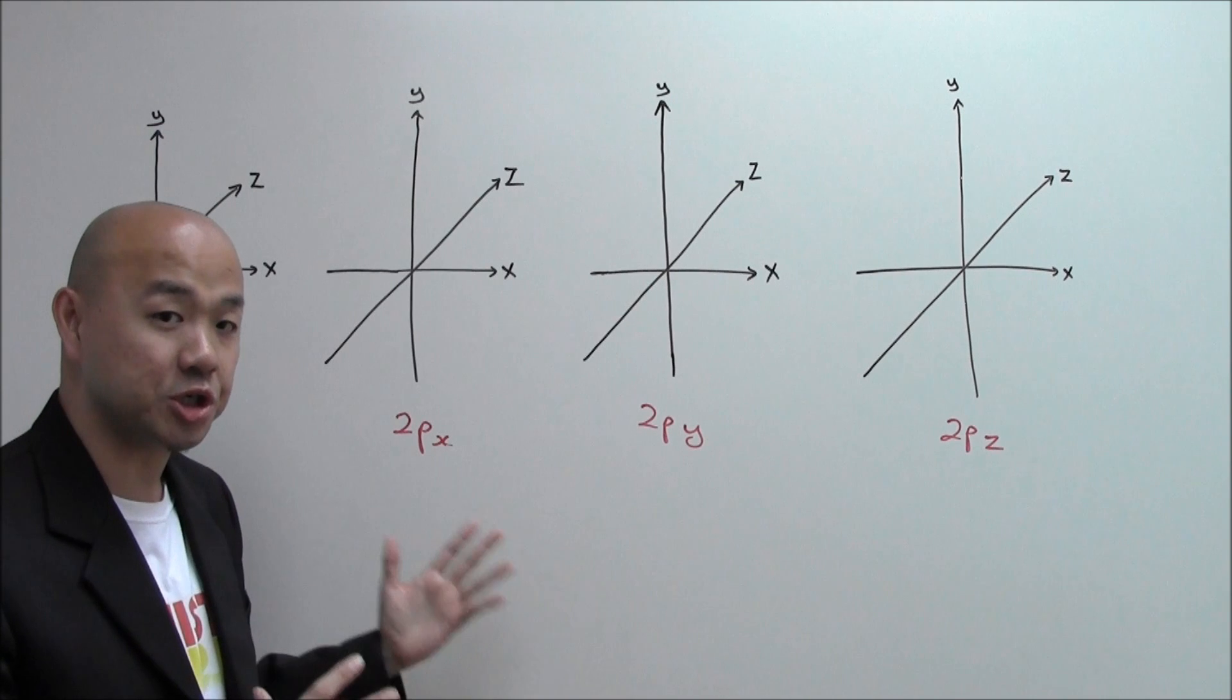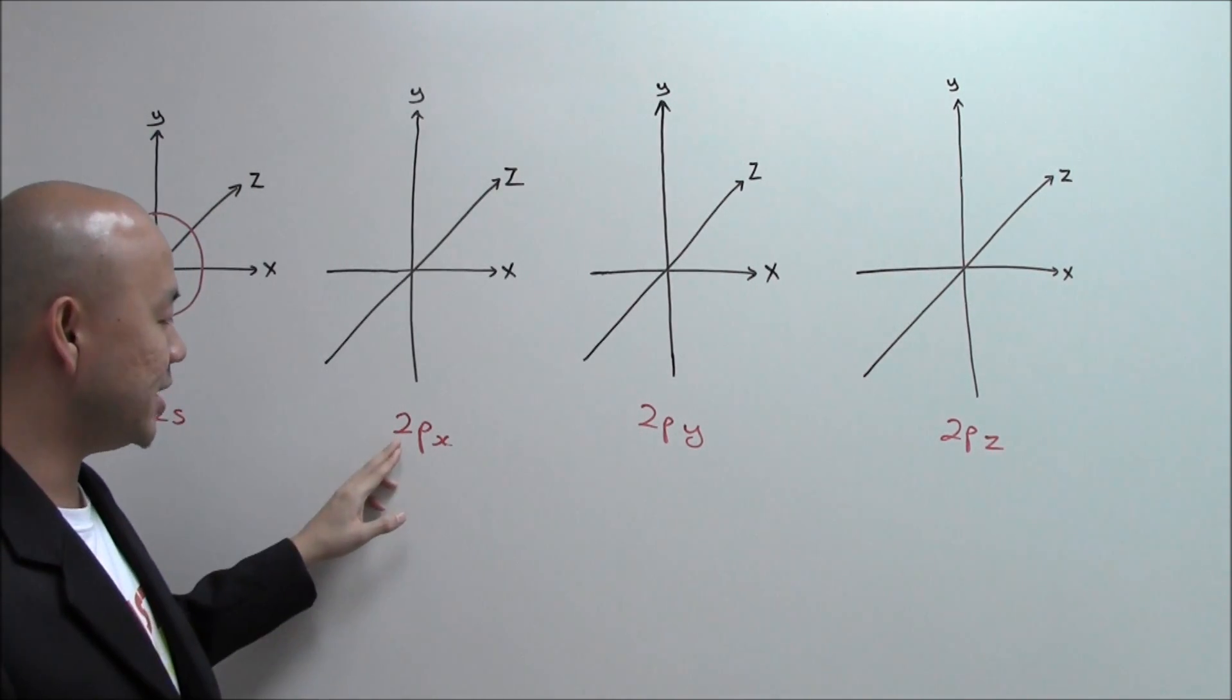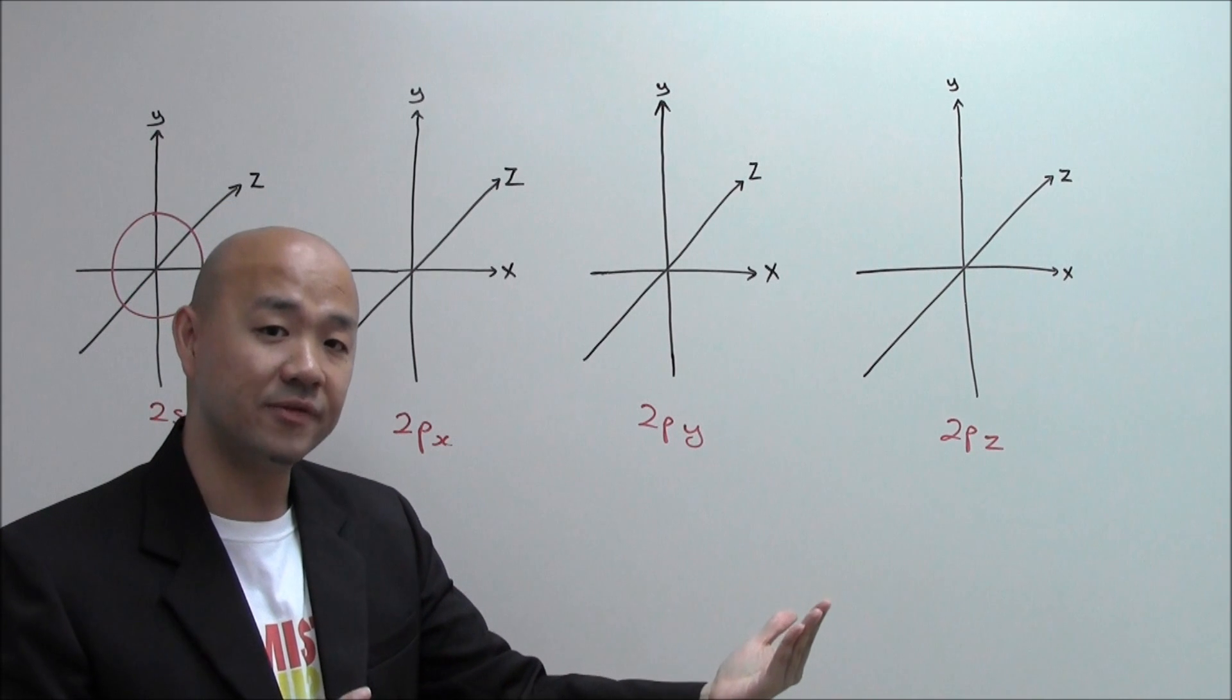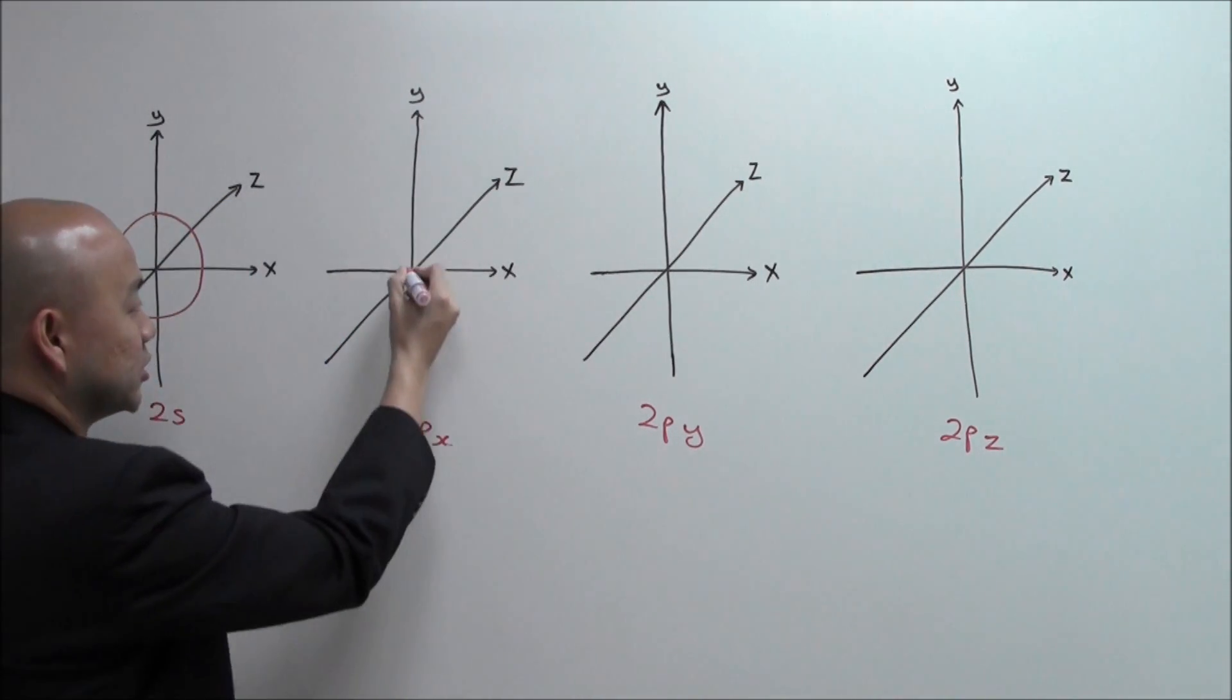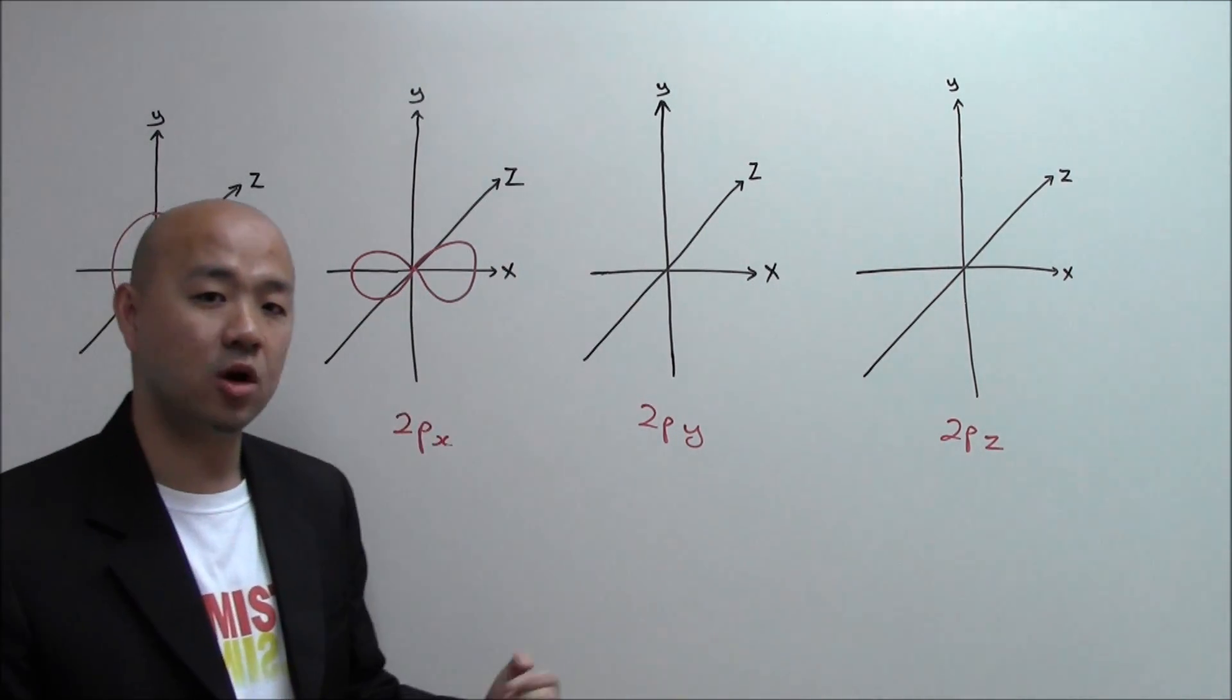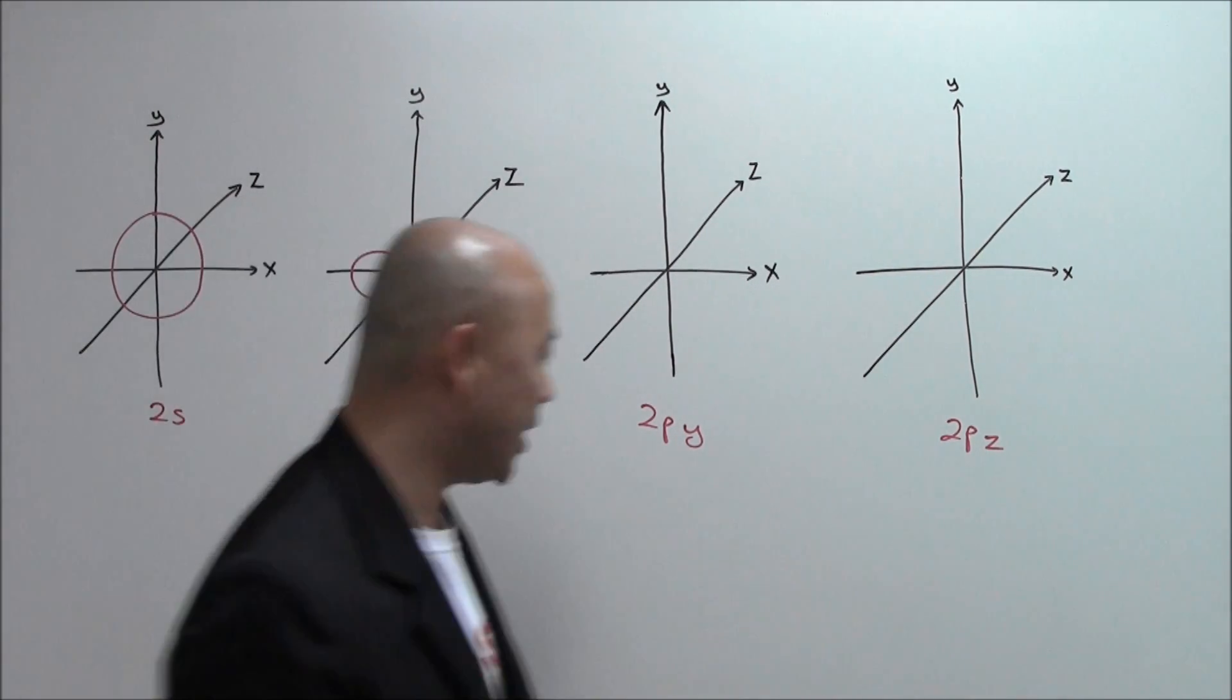The P orbitals are known to be dumbbell shape. If it's known as 2PX, it means the dumbbell is arranged in the direction of the X axis, so it should look like this. This will be your 2PX orbital.